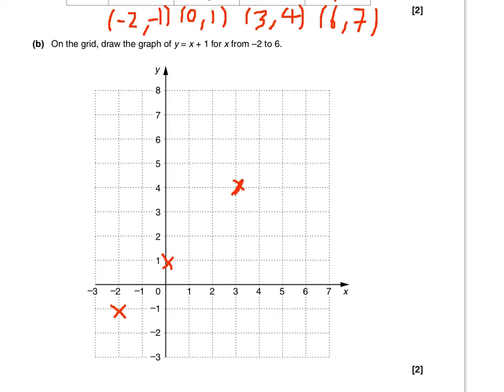And 6, 7. Now what you should be able to see is a quite clear straight line there. If there's a point that isn't on that straight line, you've probably made a mistake in part a. So go back and check it.